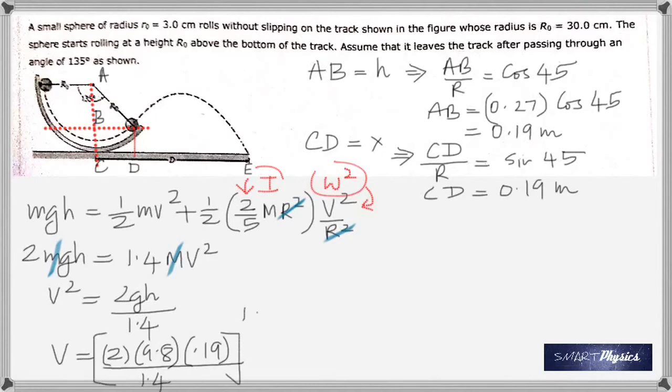When you take the square root of that, you get 1.63 meters per second - that is the speed. Now to find the distance, we need to resolve the speed or velocity into two components.